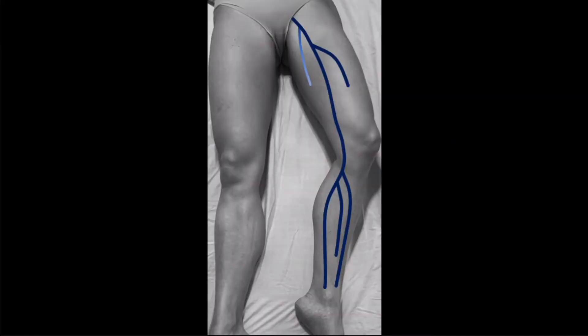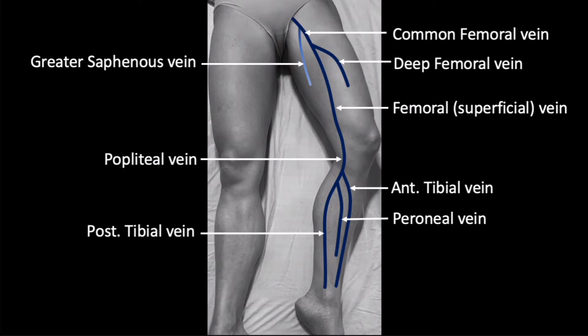If you have experience with DVT ultrasound, the previous case was likely easy to follow. However, an understanding of venous anatomy is essential for being able to perform the exam effectively. The structures of the deep venous system of the lower extremity are depicted here. While the greater saphenous vein is not considered a deep vein, I include it because it serves as a helpful landmark to let us know that we are starting our examination proximal enough.